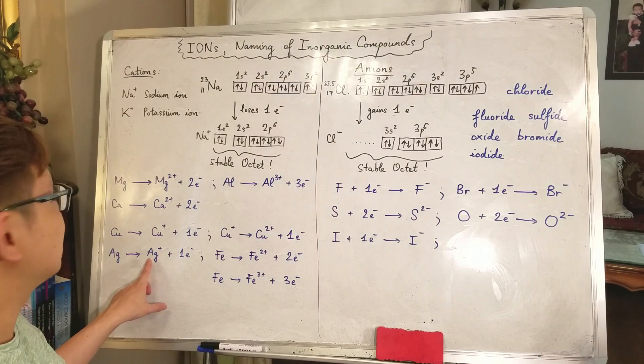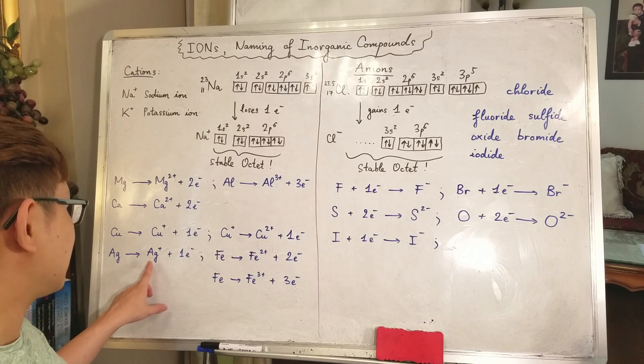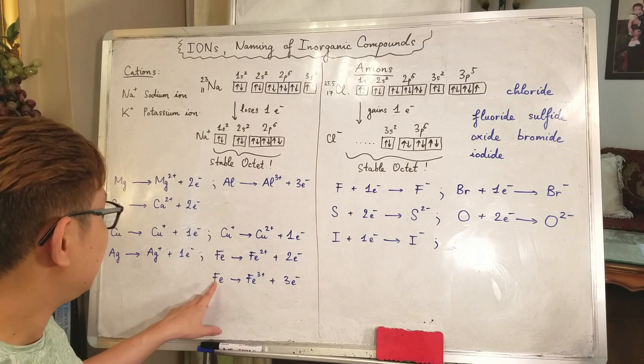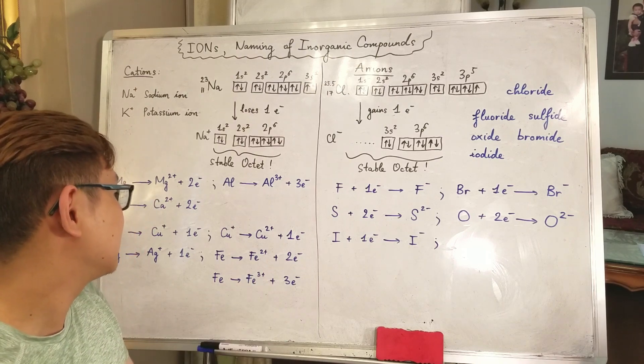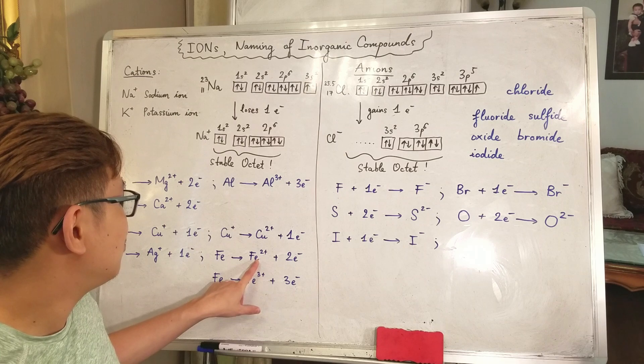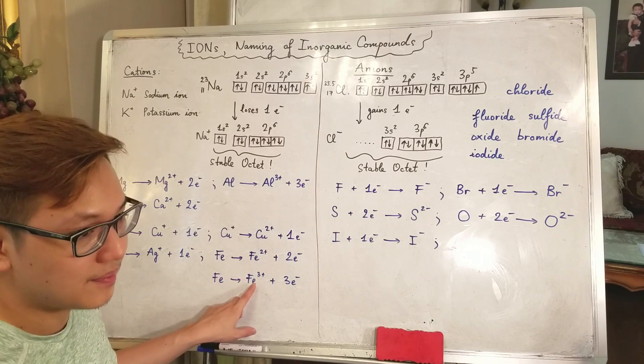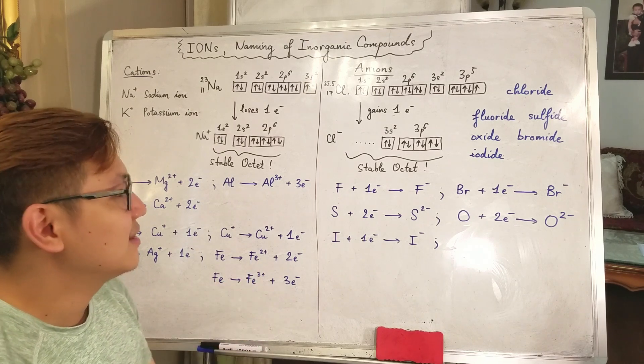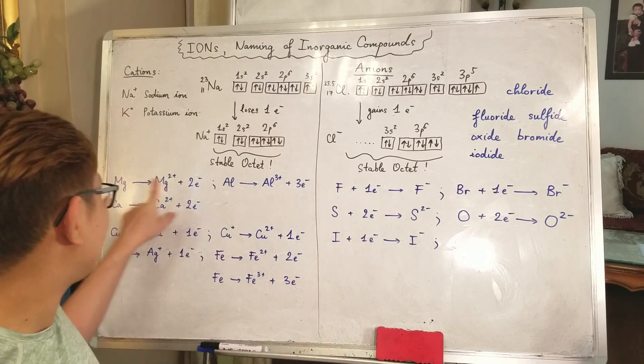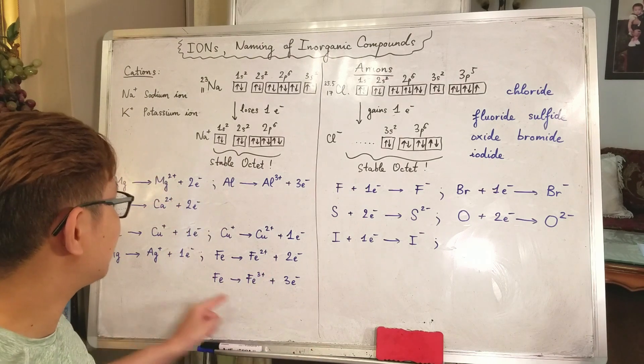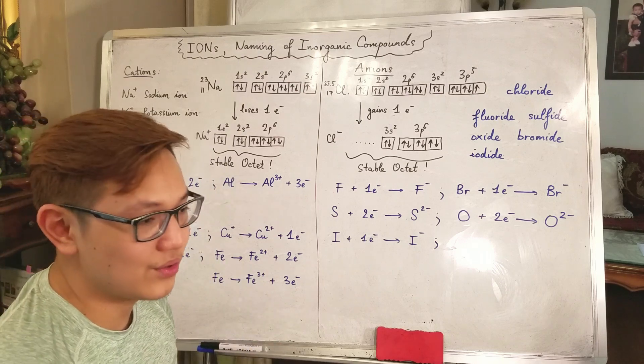There are 2 kinds of copper. Copper 1 and copper 2. You just have to remember these facts. Silver, there are 2 kinds of copper. Silver, there is only 1 kind of silver ion, silver+, 1+. For iron, you have iron 2+ and iron 3+. And they have different colors as well.